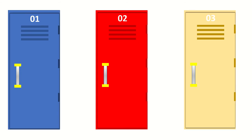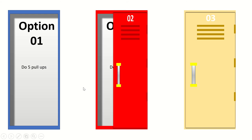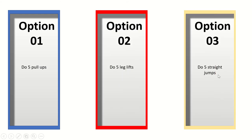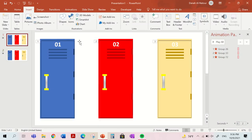So now I made another slide just to show you. You can keep the same colors or change them — five pull-ups, leg lifts, and straight jumps. And that's basically what we're going to be doing today. It's a little complicated, but I think we can go through.